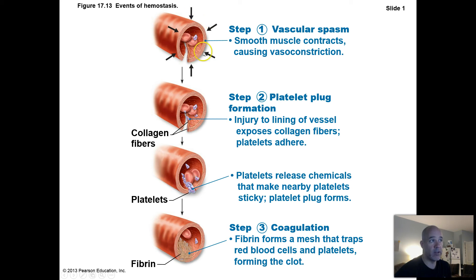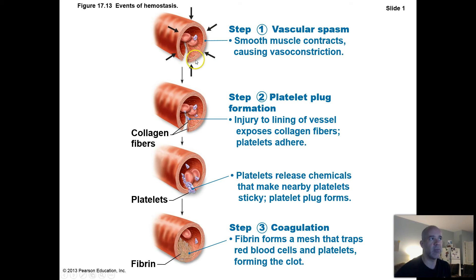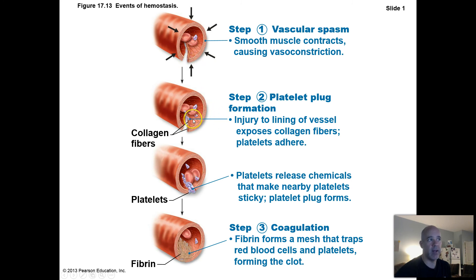The walls of your blood vessels contain smooth muscle tissue — smooth muscle cells which contract involuntarily. You can't consciously make those contract. So when you rip open a blood vessel, the smooth muscle in those walls contracts or spasms to try to reduce the size of that opening. Then your platelets come along.